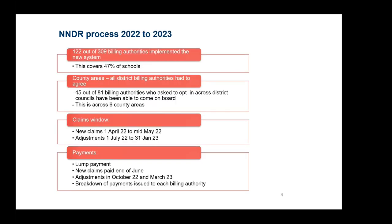The payment process launched in April this year has seen 122 billing authorities implement the new system, covering approximately 47% of our schools. In county areas, all district billing authorities had to agree. 45 out of 81 billing authorities who asked to opt in were able to onboard. These billing authorities spread across six county areas; in areas where we didn't get mutual agreement, we weren't able to bring them on board.